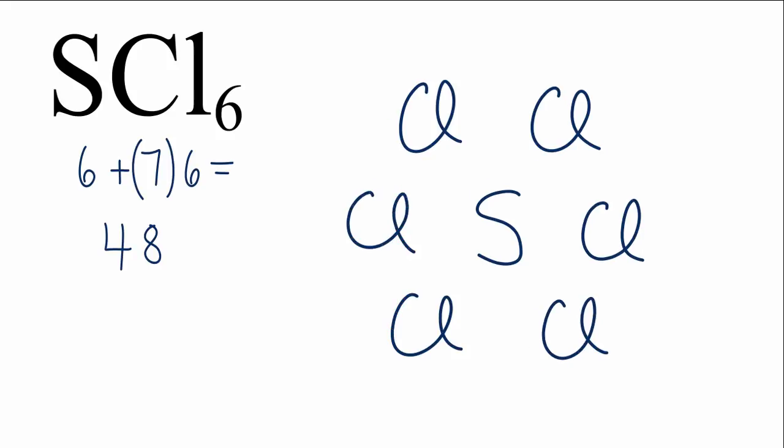So we have a total of 48 valence electrons. We'll put pairs of electrons between the atoms to form the chemical bonds. And you'll see right away that we have 12 valence electrons around that sulfur.